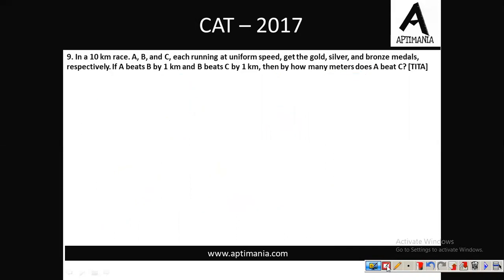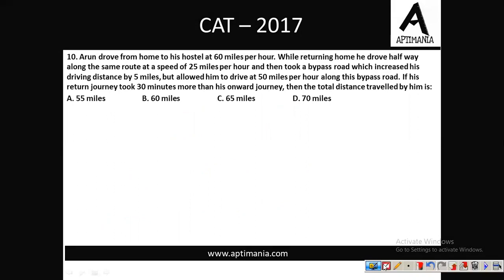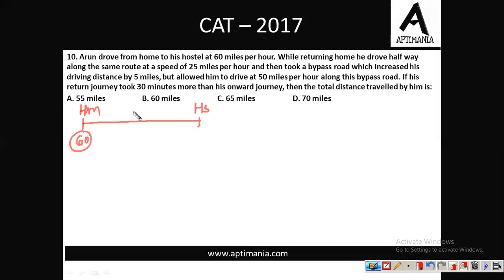Question number 10: Arun drove from home to hostel at 60 miles per hour. The distance is not given, so let us assume the distance to be D.